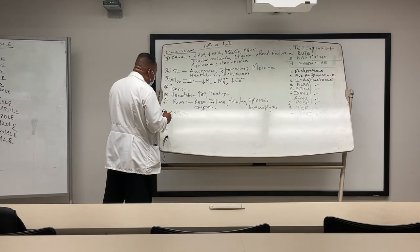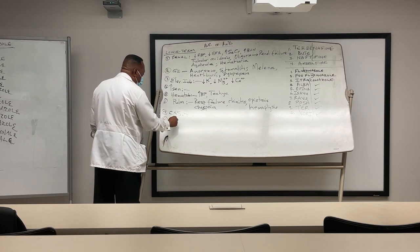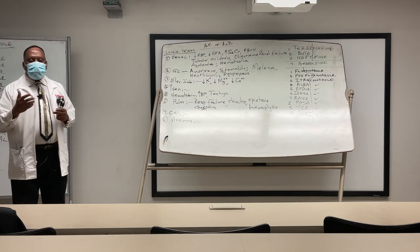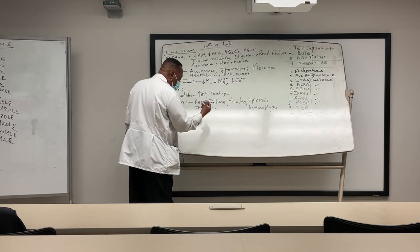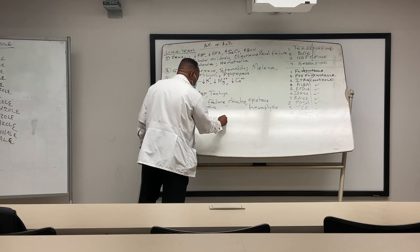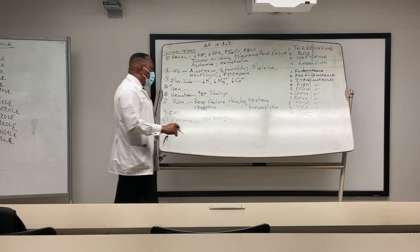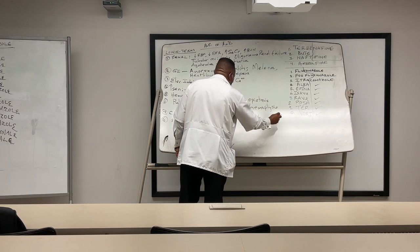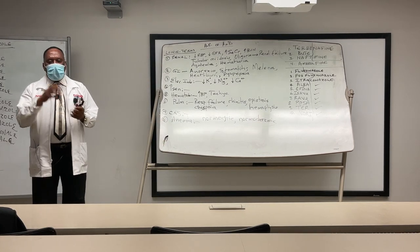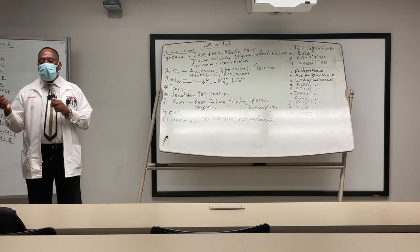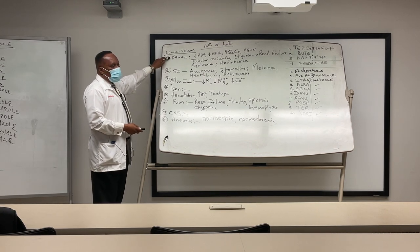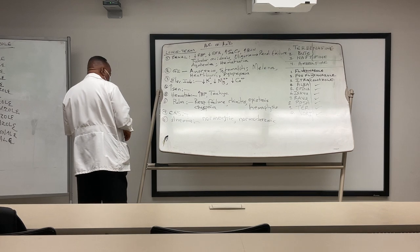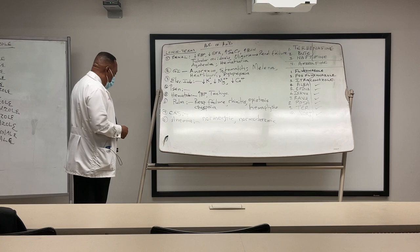We know that Amphotericin B can produce anemia. The type of anemia you get is normocytic, normochromic anemia — the cells will look normal in terms of size and normal in terms of color. This is the same type of anemia that you get in renal failure patients, which ties in well with the renal adverse effect we discussed.